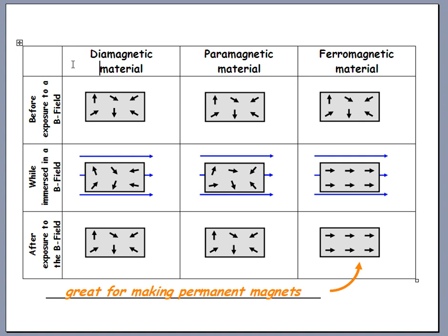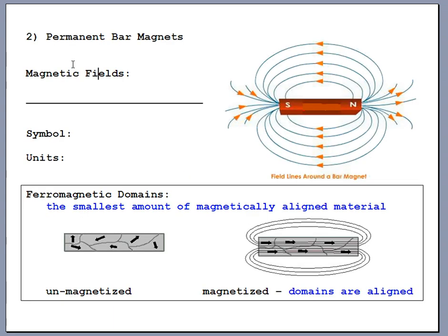For the next couple of pages we're going to talk about permanent magnets, typically made out of iron, cobalt, or nickel. Those are the big three ferromagnetic materials. Now let's talk about magnetic fields.